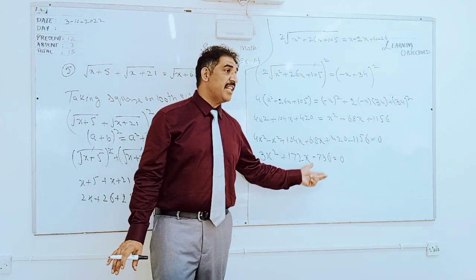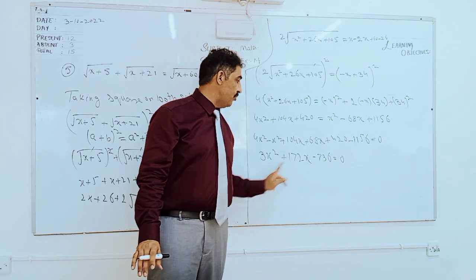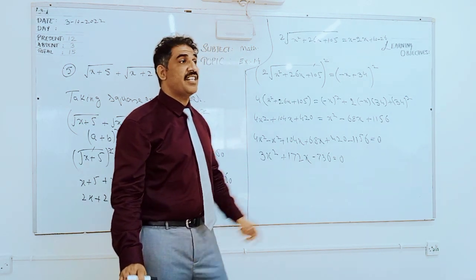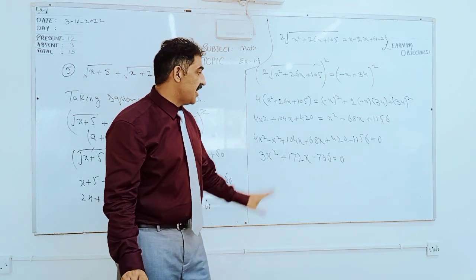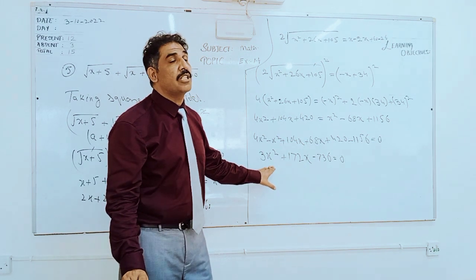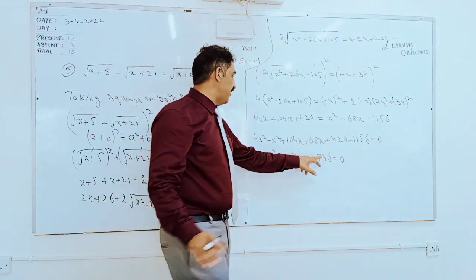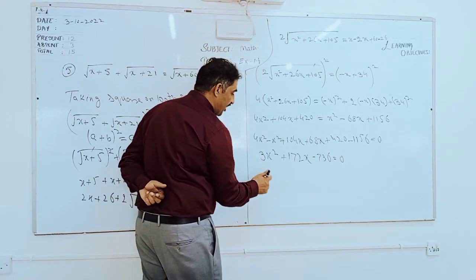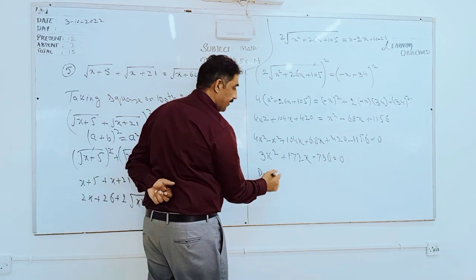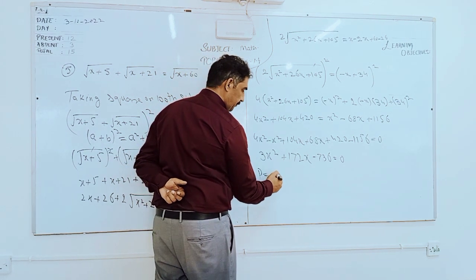3x² + 172x - 736 = 0. First of all, 3 is common, so 3(x² + 172x/3 + 736/3). Now we have to make the factor whose product is equal to these two terms and sum is 172.